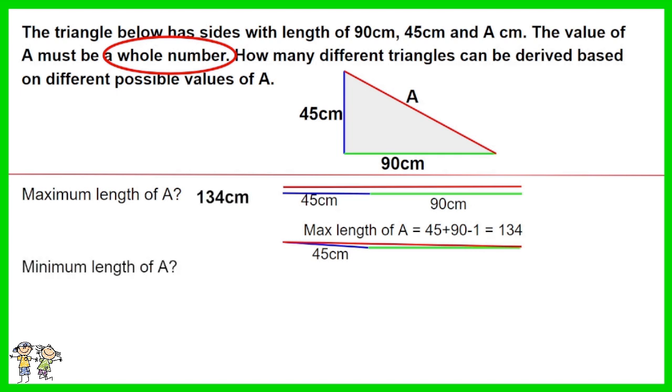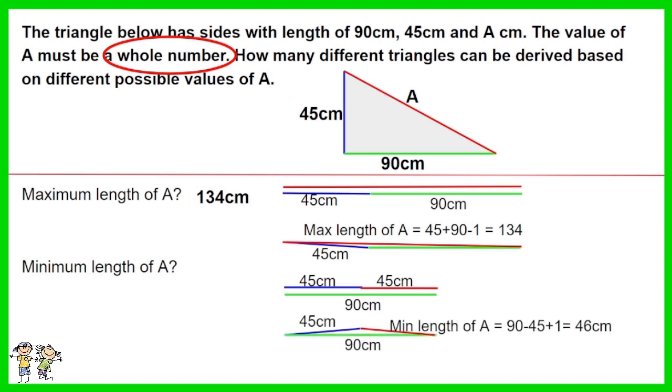Now let's find the minimum length of A. If we set the minimum length of A to 90 minus 45, which is 45, it will be impossible to form a triangle. As such, the minimum length of A is 90 minus 45 plus 1, which is 46. The total number of possible triangles equals 134 minus 46 plus 1. The plus 1 counts the value A equals 46. The number of possible triangles is 89.